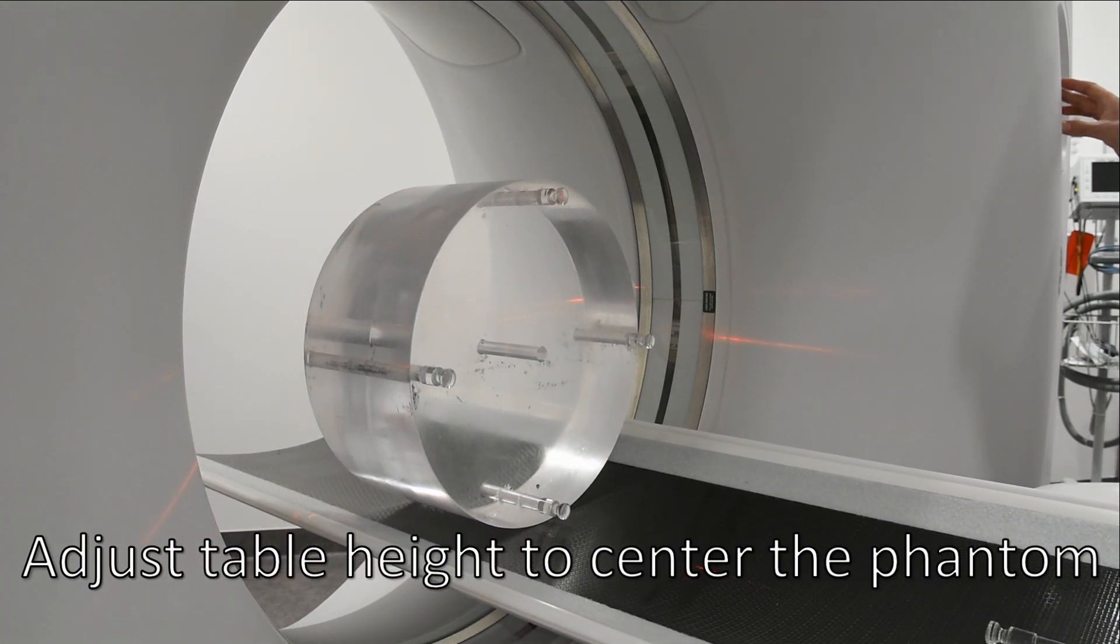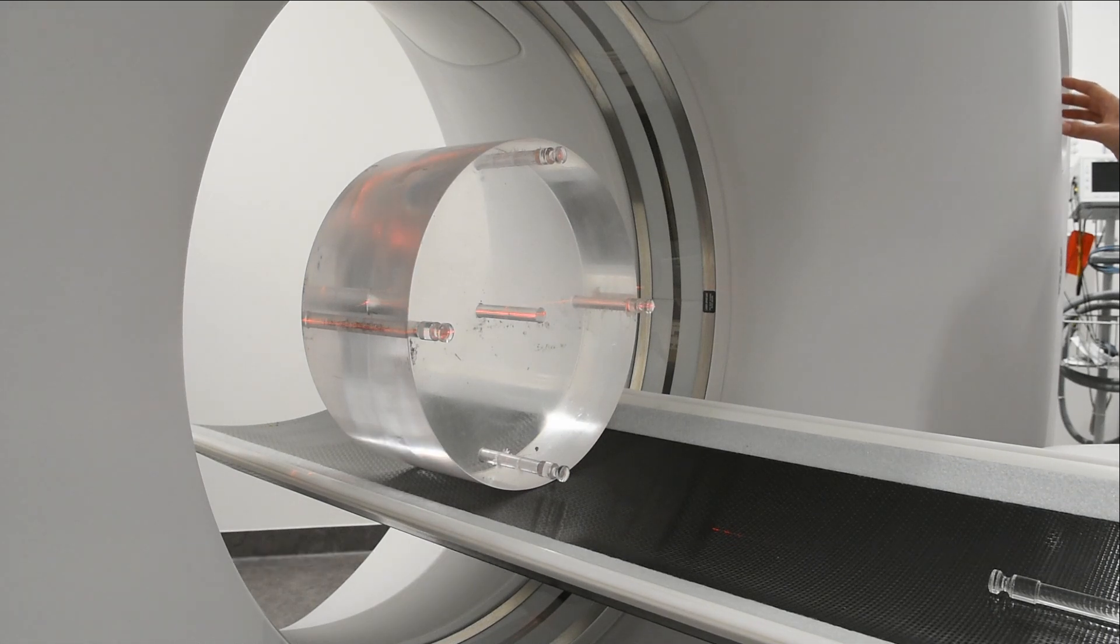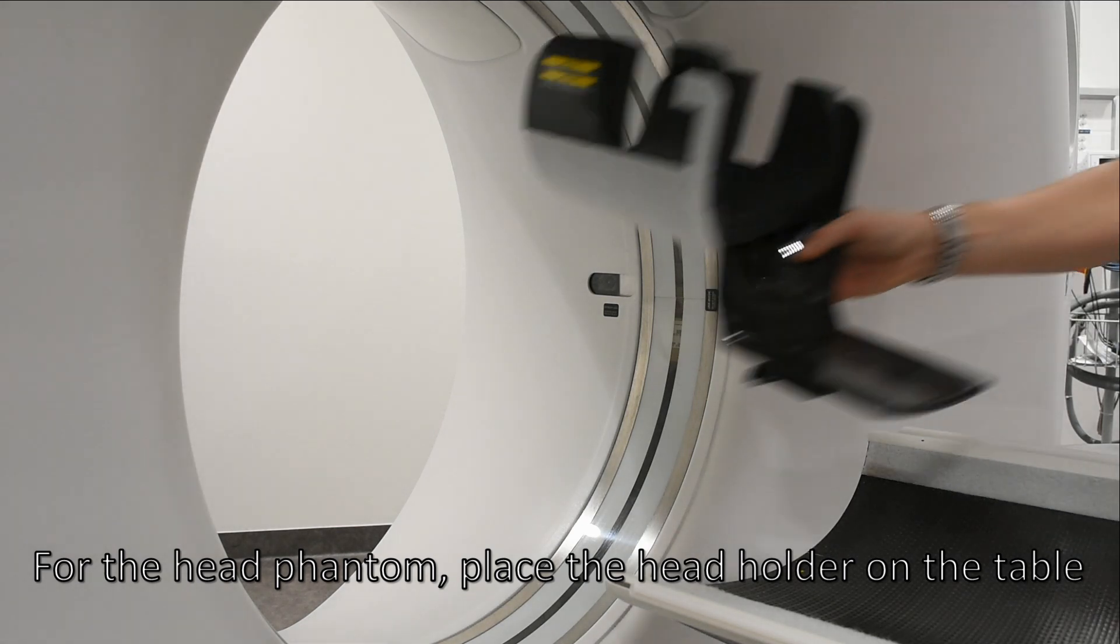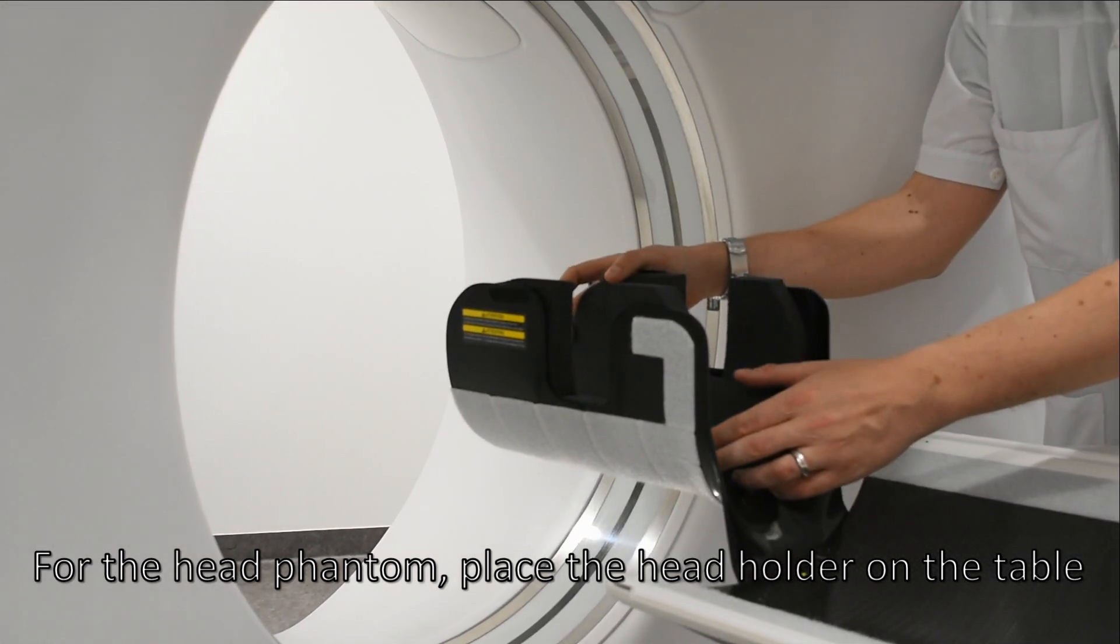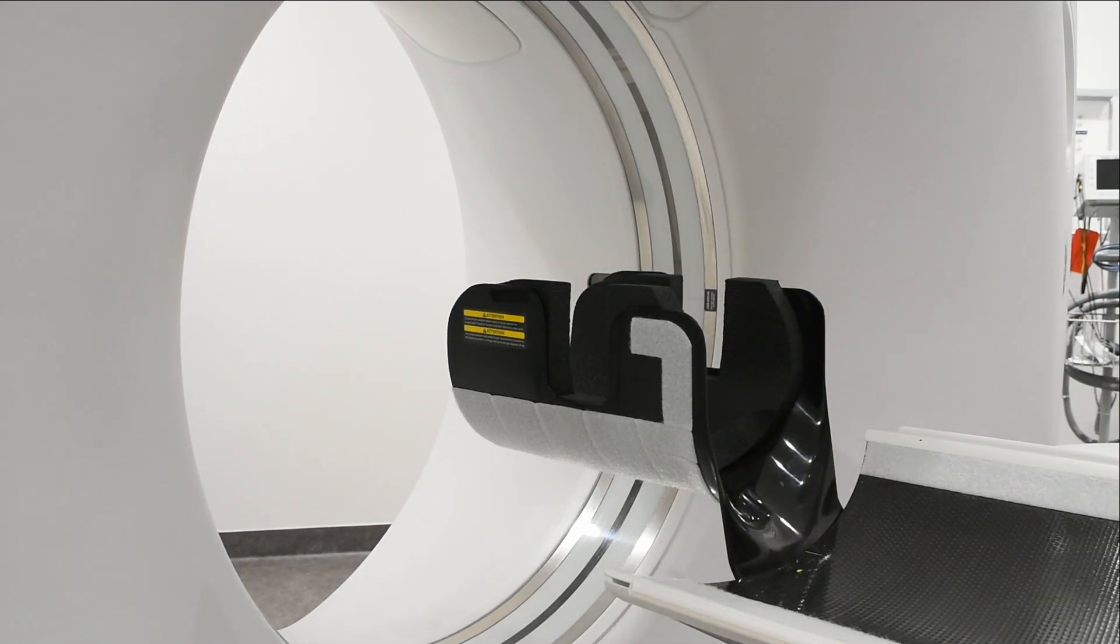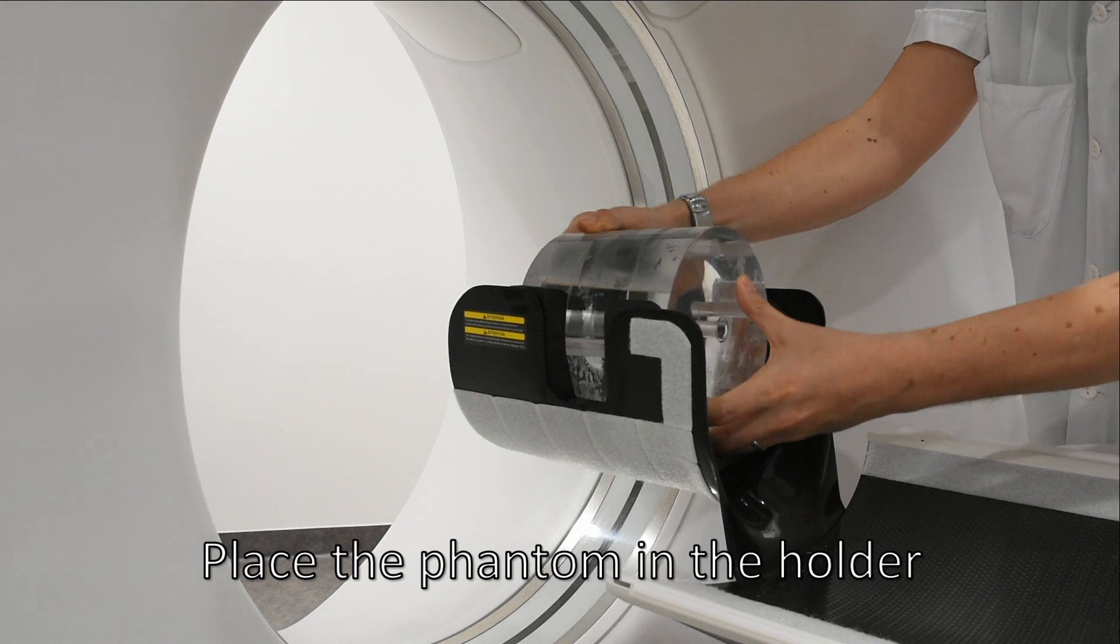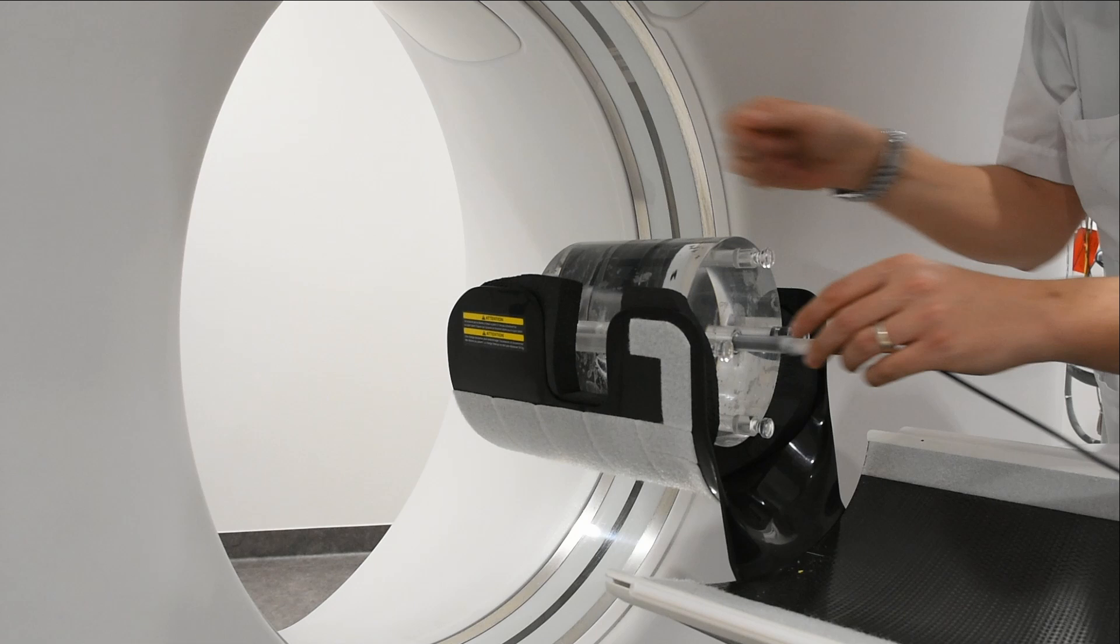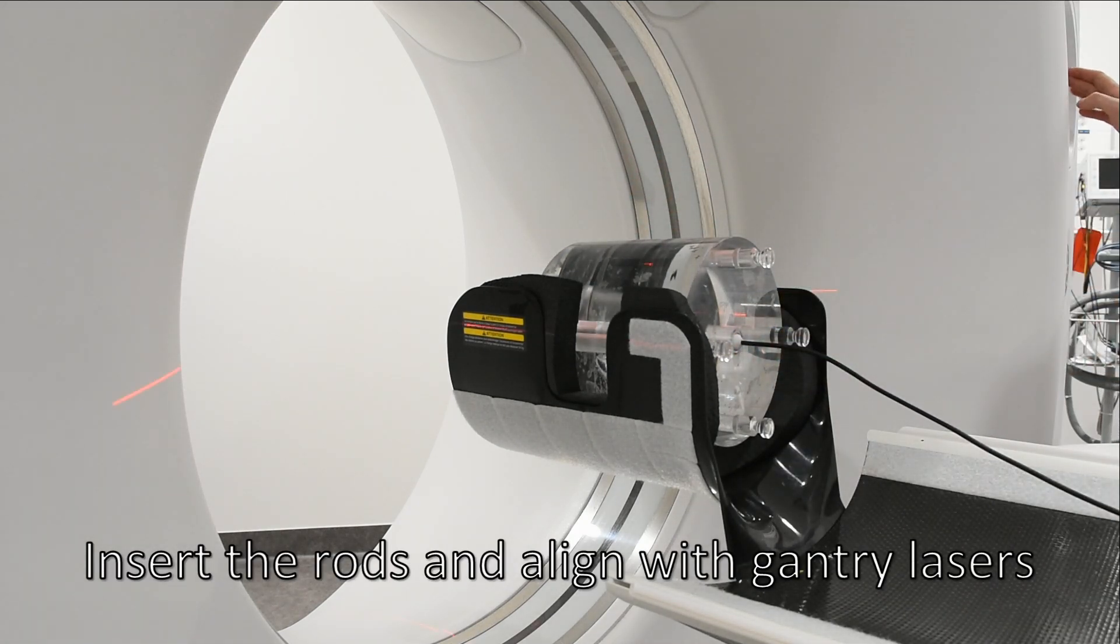Adjust the table height to center the phantom. For the head phantom, place the head holder on the table. Place the phantom in the holder. Insert the rods and align with gantry lasers.